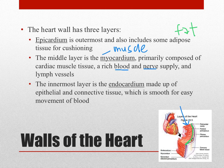The innermost layer is called the endocardium — endo means in. It is the innermost layer of heart tissue and is made up of connective tissue and epithelial tissue. Epithelial tissue tends to be pretty smooth, which provides a really easy pathway for blood to be moved through the heart.